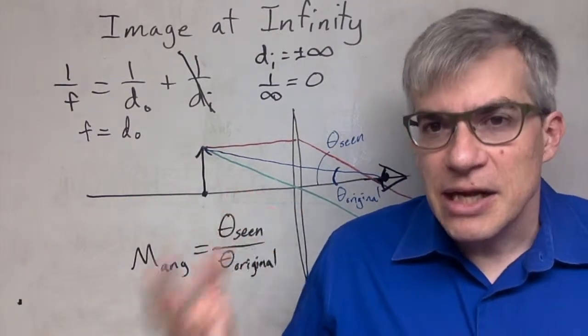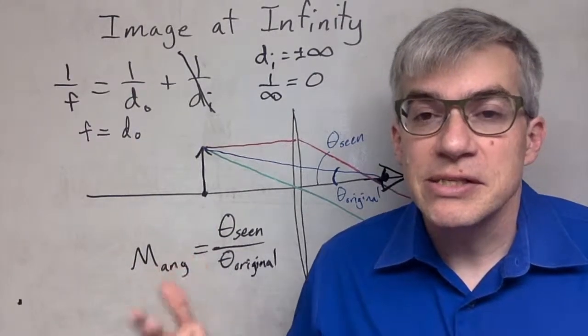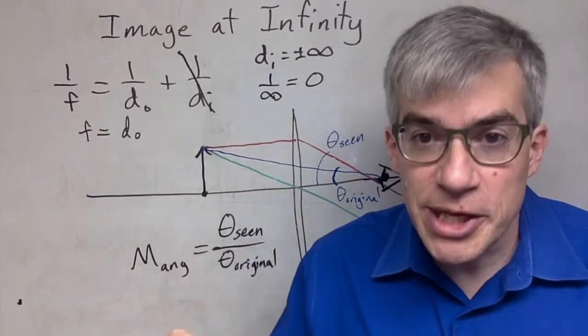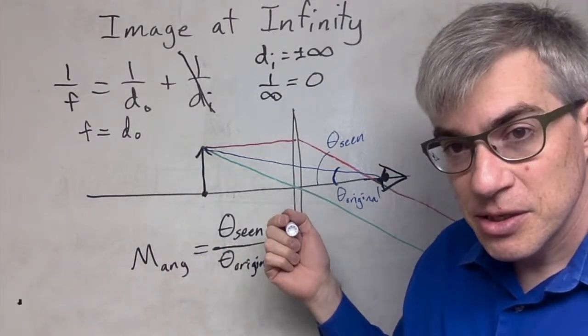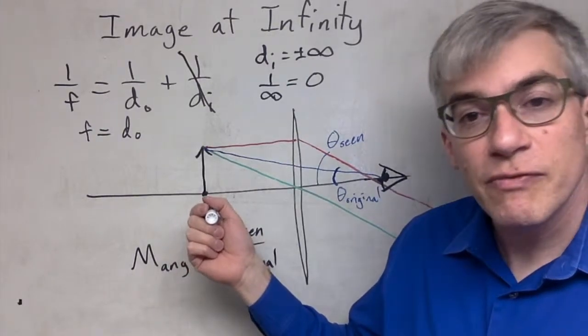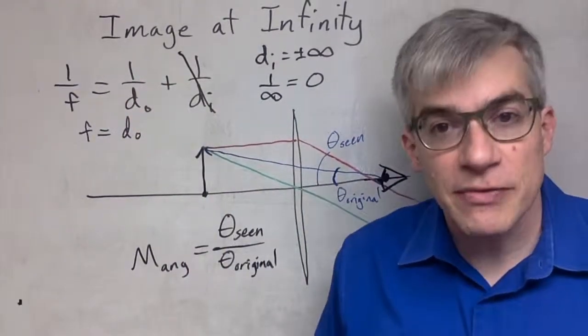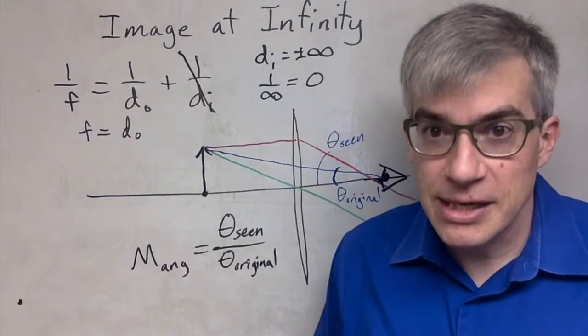When you're making a telescope or a microscope, they figure they might as well design it so it's easy to use, so you don't have to squint while looking into it. They will always position the eyepiece such that the next-to-last image is sitting on its focal point, so that the very final image will be off at infinity, which is just easier for your eyes to see. That's the idea.